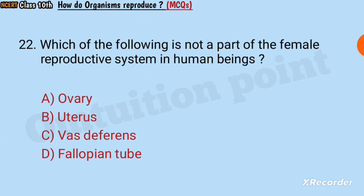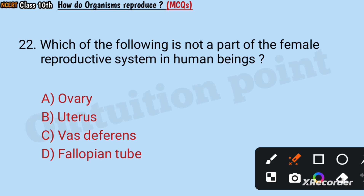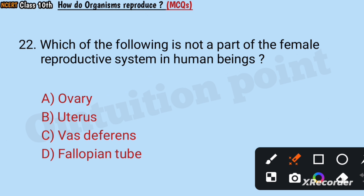Question number 22: Which of the following is not a part of the female reproductive system in human beings? Ovaries, uterus, vas deferens, or fallopian tube? Answer: Vas deferens.